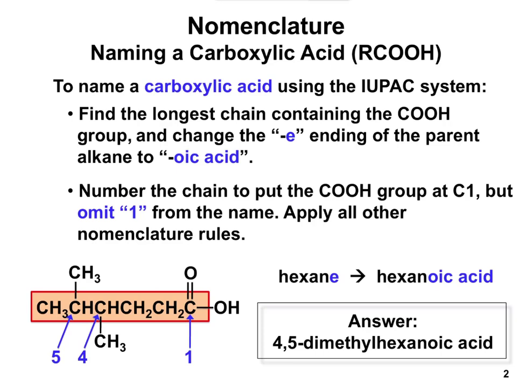To name a carboxylic acid, you're going to find the parent chain, and the key is the suffix. The suffix for a carboxylic acid is going to end in -oic acid. So you find the parent chain and then change the ending to -oic acid. In the example shown, there's a six-carbon long carboxylic acid — that's hexane — so you drop the E and change it to -oic acid, giving us hexanoic acid.